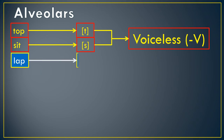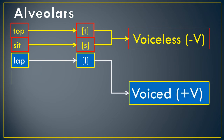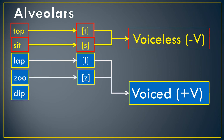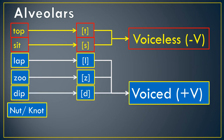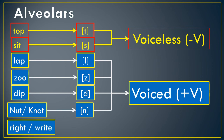Continuing with alveolars, we have /d/ like in 'dab,' which is voiced; /z/ like in 'zap,' which is voiced; /n/ like in 'nap,' which is voiced; /l/ like in 'lab,' which is voiced; and /r/ like in 'run,' which is voiced. So for alveolars, we have seven sounds: two of them are voiceless and five of them are voiced.